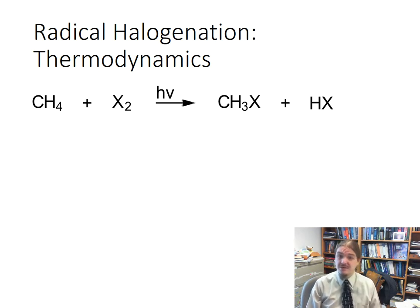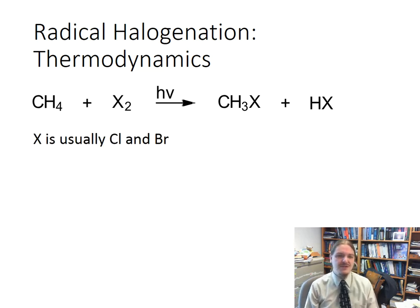I'm going to end up focusing a lot on chlorine and bromine. So here's my generic reaction: CH4 plus X2, a generic halogen molecule, UV irradiation to get the radical reaction, CH3X halomethane and HX hydrogen halide as the products. And again, I'm going to focus usually on chlorine and bromine.